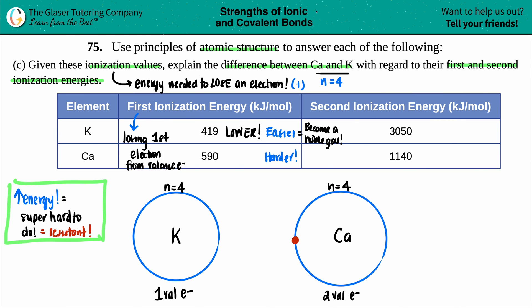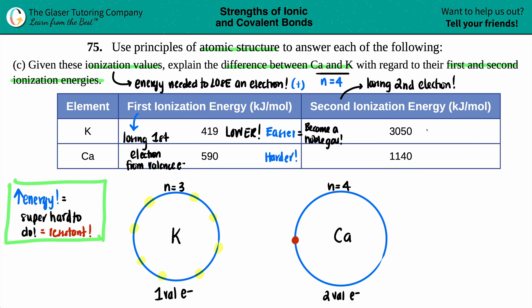Now for the second ionization energy - 'second' means you're losing electron number two, having already lost the first one. Potassium now drops down to n equals three and remember, potassium is already a noble gas with its noble gas configuration. Look at the difference in values: potassium's second ionization energy is 3050 kilojoules, which is way higher than calcium's 1140. That huge number means it is super hard to do.